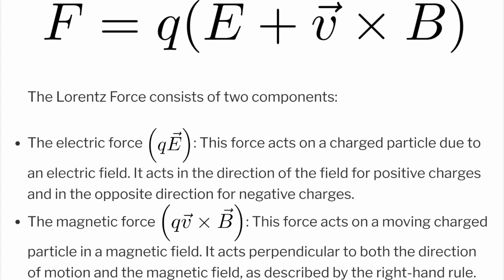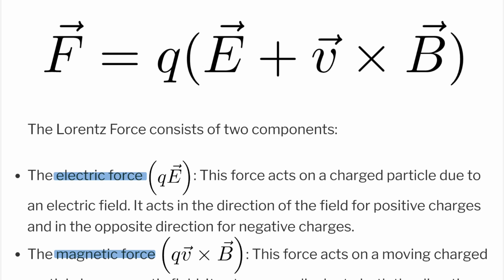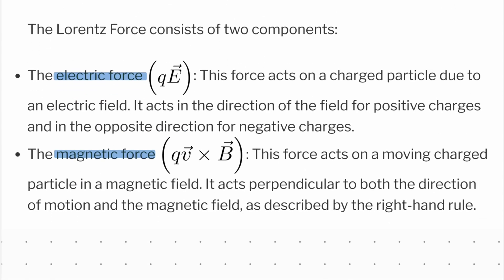The Lorentz force has two components: the electric force and the magnetic force. The electric force is q times E, the electric field vector. It's important to note that the direction of the electric force is in the direction of the field for positive charges and the opposite direction for negative charges.